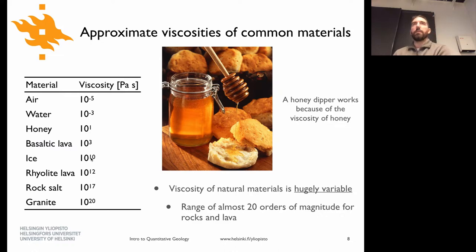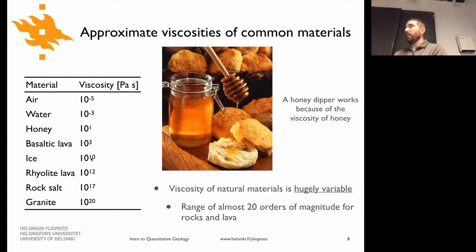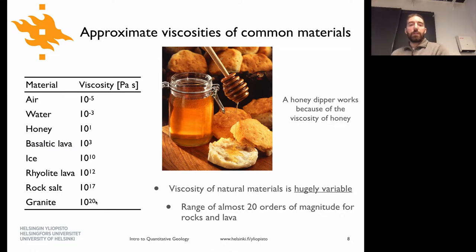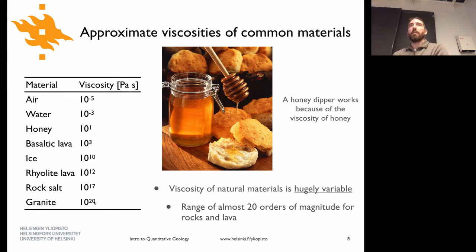Ice has a viscosity of 10^10. If you filled a channel with granite and tried to measure velocity, it's not really going to flow very readily since its viscosity is 10 orders of magnitude higher than ice. Granite may actually be deforming — if it's sitting inside a glacial valley the stress may still be acting on it — but it's so much more viscous that it's essentially not measurable. If ice flows at meters per year, granite would be at around 10^-10 meters per year.